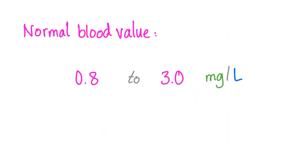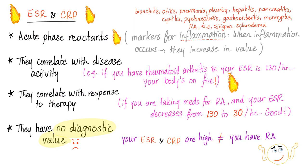What's the normal blood value? 0.8 to 3 milligrams per liter — not per deciliter, milligrams per liter. We don't really care about low CRP, but high CRP could be clinically significant. ESR and CRP are both acute phase reactants and markers of inflammation.